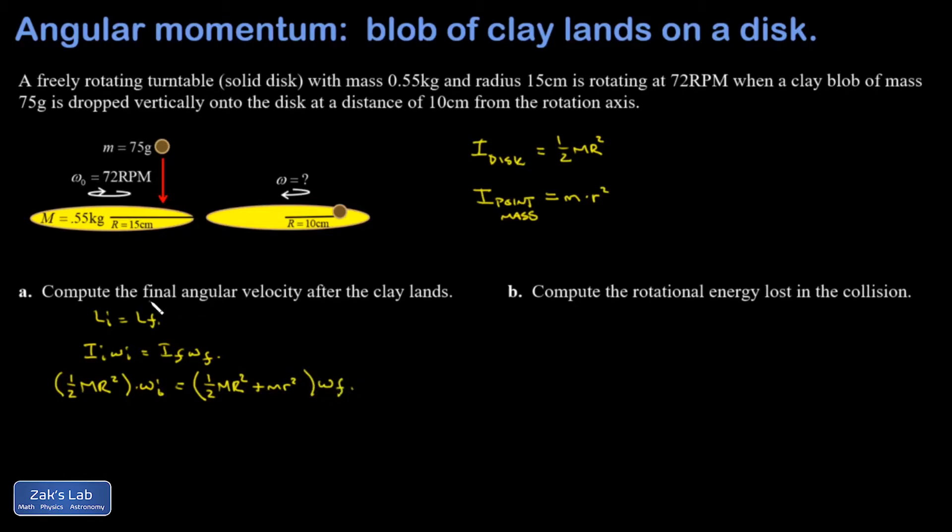And my goal here is to get the final angular velocity. So I'm just going to divide by its coefficient. I get omega final is going to be, let me just multiply both sides by two real quick. I don't want to have a complex fraction. So I distributed a two to every term. So it's going to be capital MR squared omega initial over MR squared plus two little m little r squared.